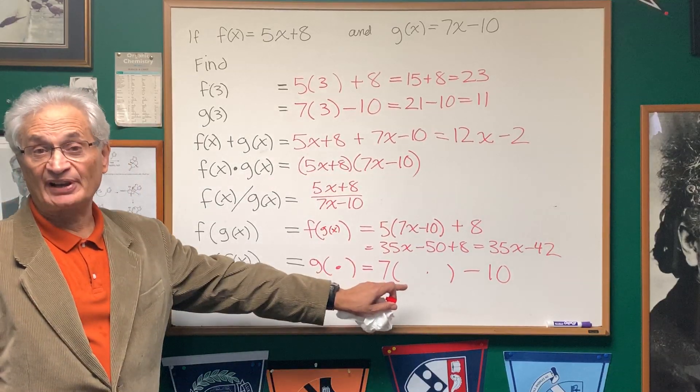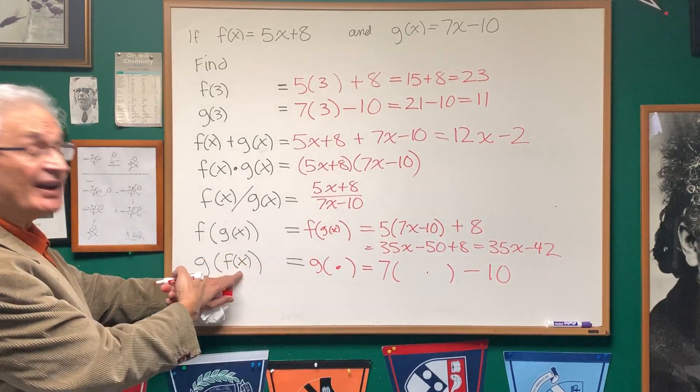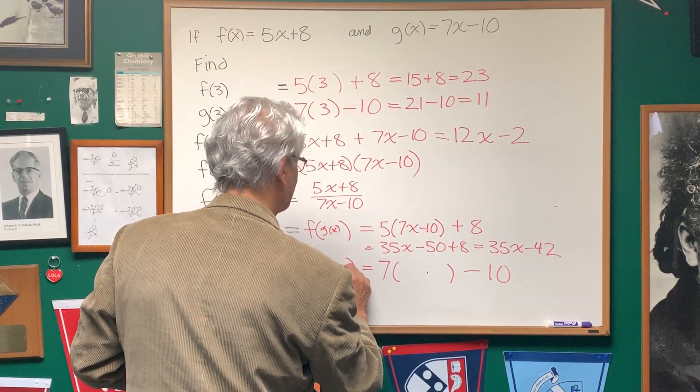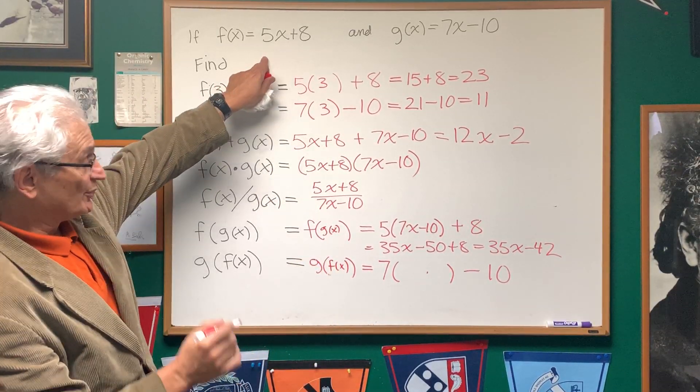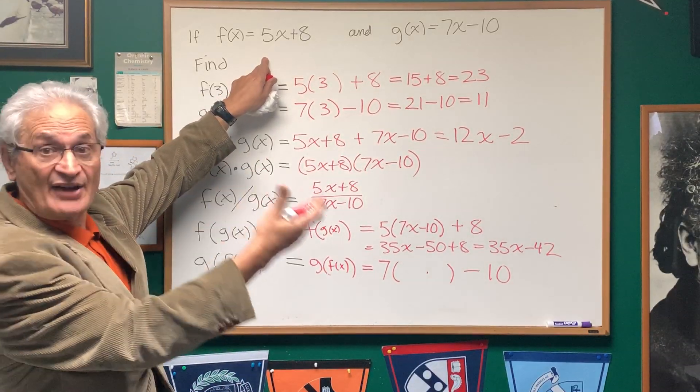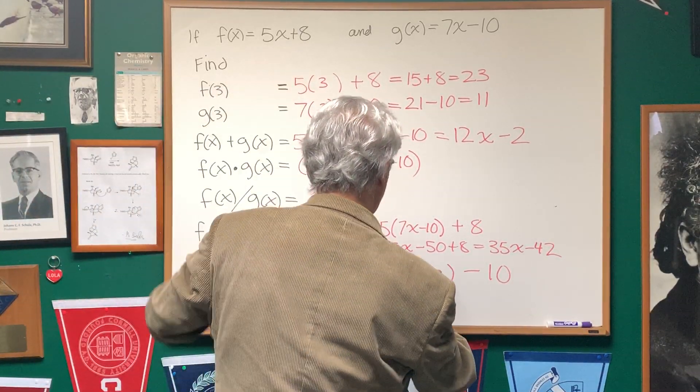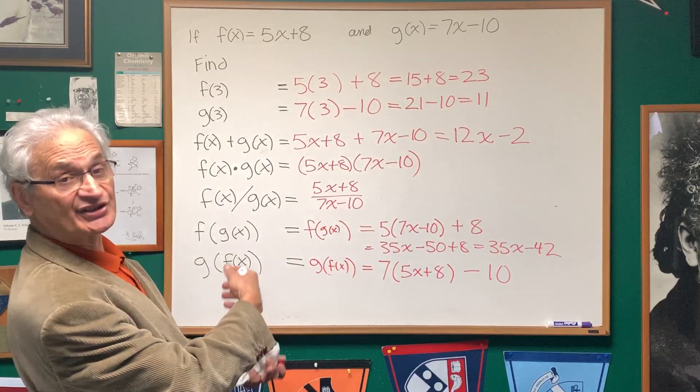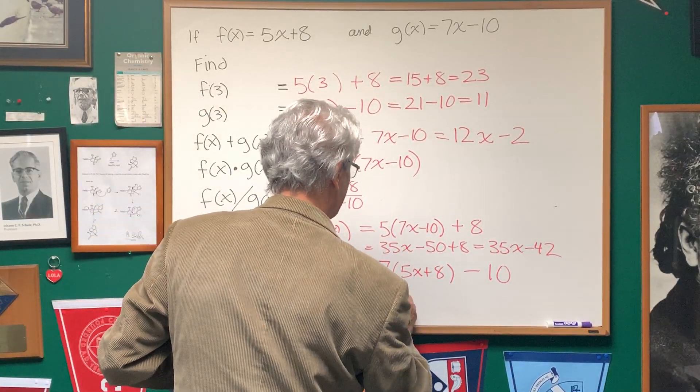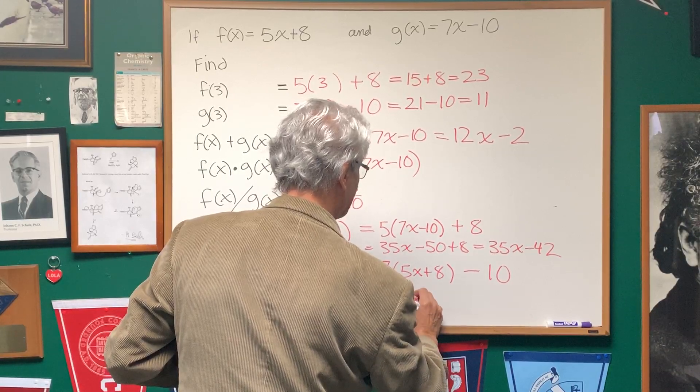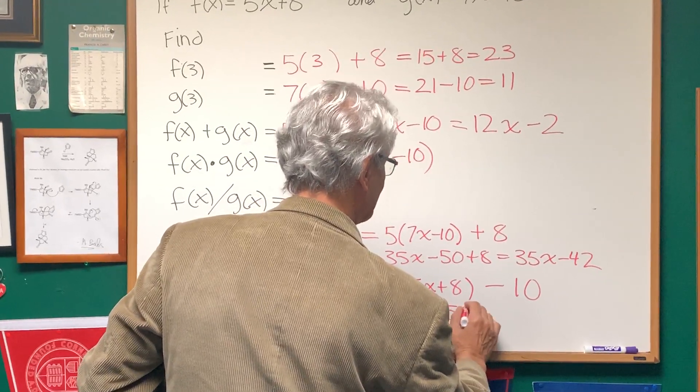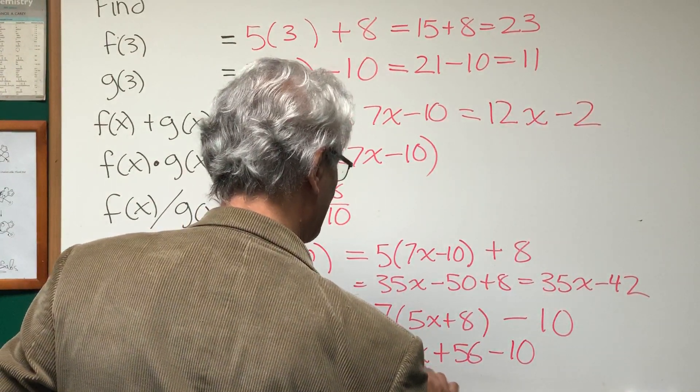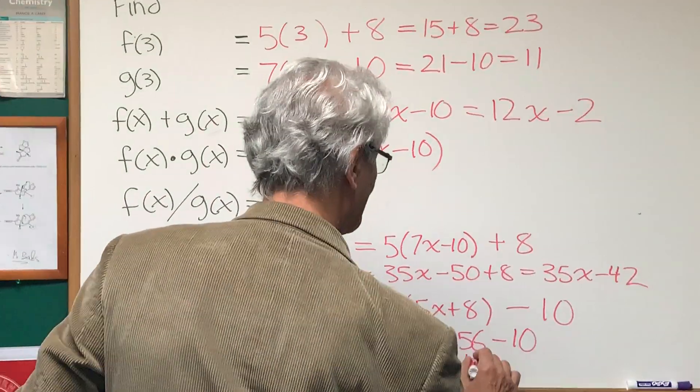And what we're going to do is replace the dot on each side with the input function. On the left, it's going to be replacing the dot with f(x). And on the right, we'll replace the dot with what f(x) equals, 5x plus 8. So now we just simply multiply that out. 7 times 5x is 35x. 7 times 8 is 56 minus 10. So the final answer is 35x plus 46.